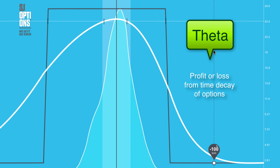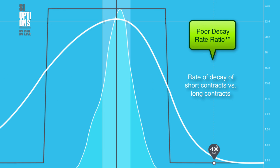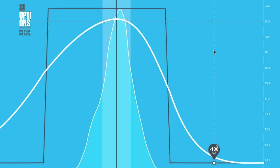Theta. Most of us know theta — your theta is going to dictate how much the trade can make daily from all of the options decaying. This trade has a positive theta, so as you go through time the theta element of the trade benefits the trade. However, it actually has a very poor decay rate ratio of less than one — that's a trademark metric of San Jose Options. What this means is that your long contracts are actually decaying much faster than your short contracts. So even though the trade has a positive theta, it has a very poorly designed theta, because your long contracts, which are your hedge and protection for this trade, are decaying at a faster rate than your short contracts. Positive theta, but a very poor decay rate ratio.